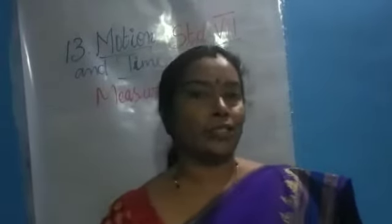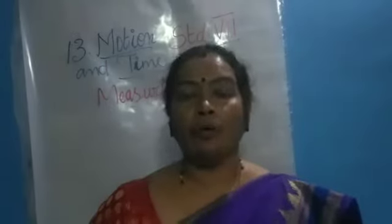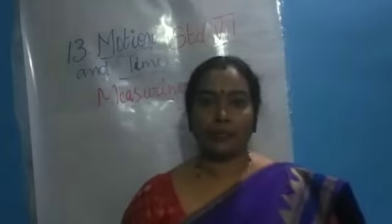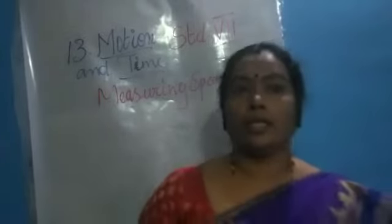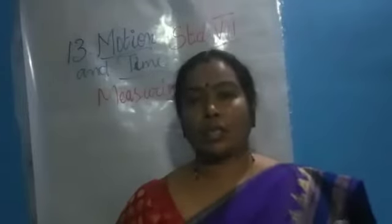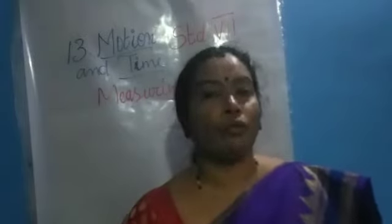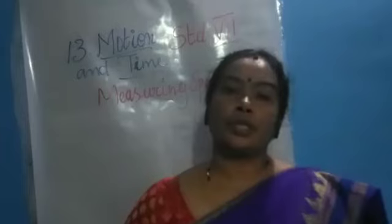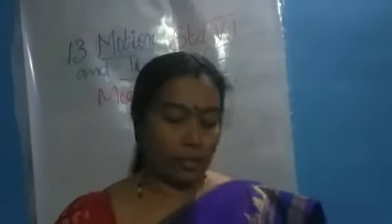Hello children. We had stopped at how to find out speed, and in the last class we studied how we measure time. Nowadays we use advanced, more accurate watches and clocks. In the golden days, before the invention of these clocks, our ancestors used many kinds of instruments to measure time. In your textbooks it is given — the sun dial, water clocks, sand clocks — our ancestors used these to measure time.